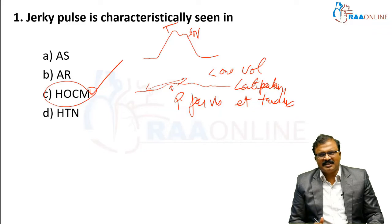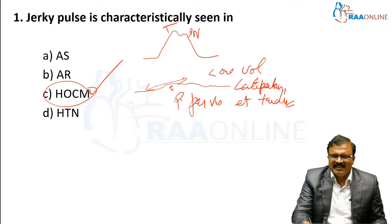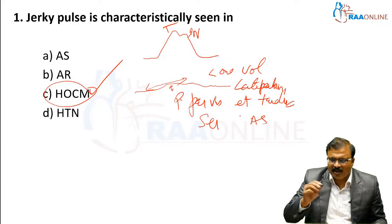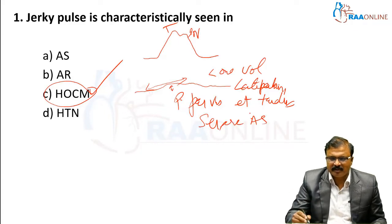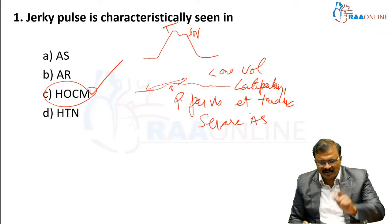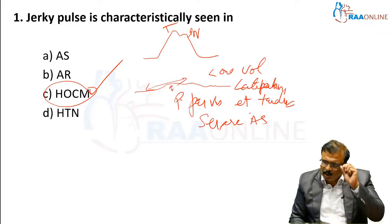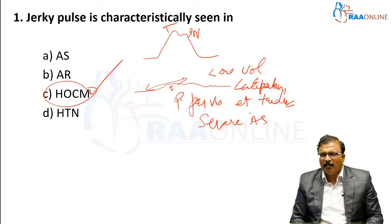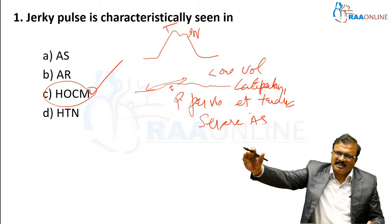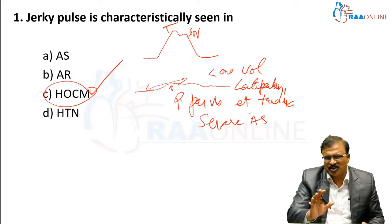This pulse is seen in severe aortic stenosis — not in all aortic stenosis. Mild and moderate will not have it, but low-volume, late-peaking pulse is a very classical feature of severe aortic stenosis.